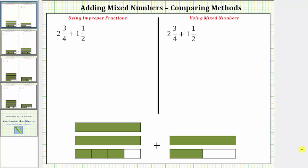Welcome to a video that will show two methods for adding mixed numbers. We will add the mixed numbers using improper fractions and then using mixed numbers. We will also model the sum using the fraction bars below. We are given two and three-fourths plus one and a half. Here is the model for two and three-fourths and here is the model for one and a half.